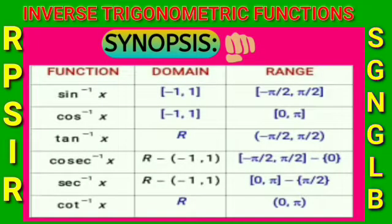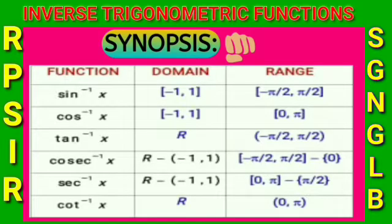Now see the table of domain and range. Sin⁻¹: domain is [-1, 1], range is [-π/2, π/2]. Cos⁻¹: domain is [-1, 1], range is [0, π].